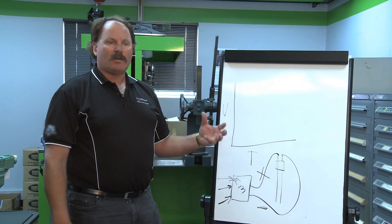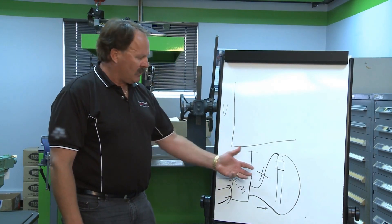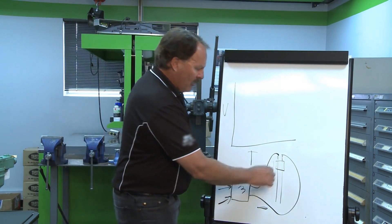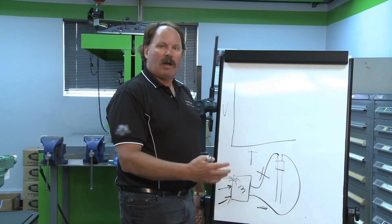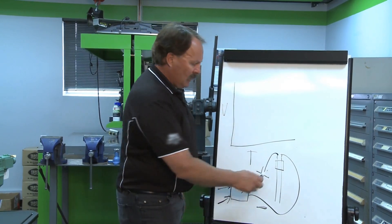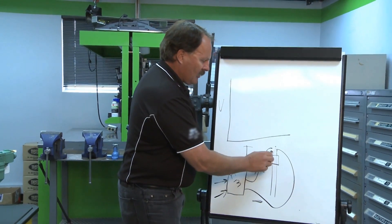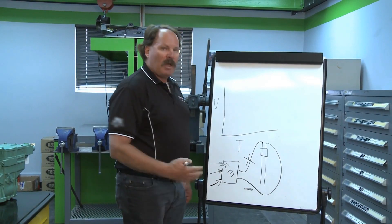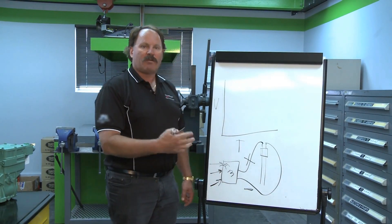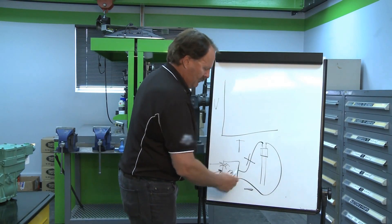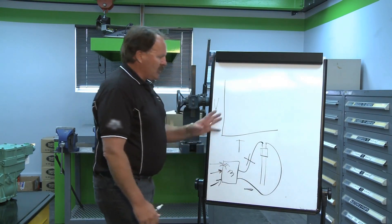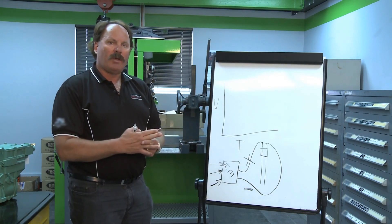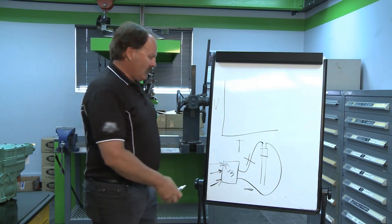The way the modern system works with these injectors is that the current — the juice, the power, however you want to term it — is always sitting there, and the computer, when it commands that injector to fire, completes the ground. I'm going to show you quickly how that looks on an oscilloscope.